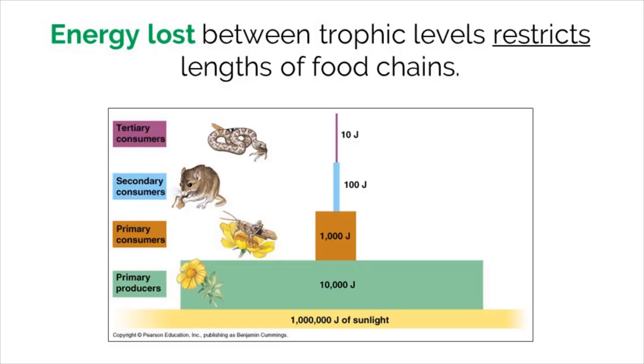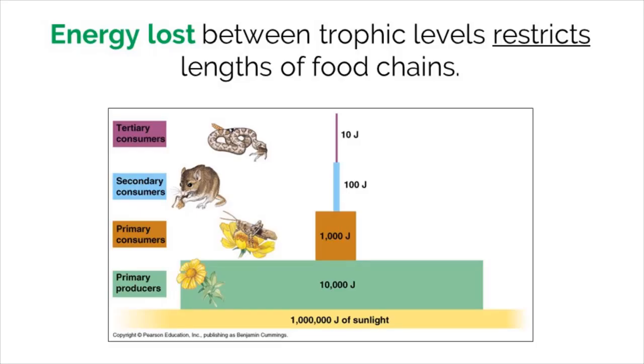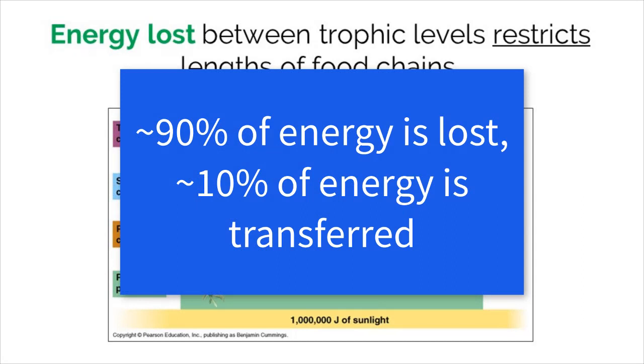As stated before, energy is lost as it is transferred to the next trophic level of an ecosystem. But how much energy is lost? The general rule is that about 90% of energy is lost from one trophic level to the next. Therefore, about 10% of usable energy is transferred.